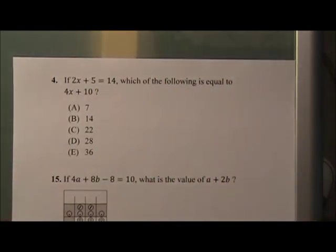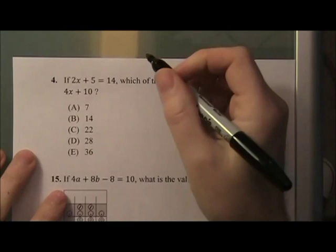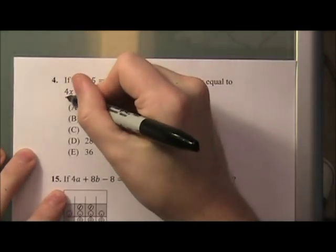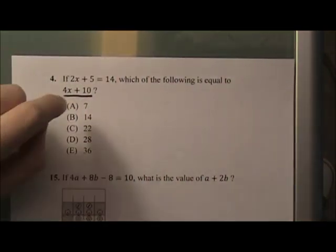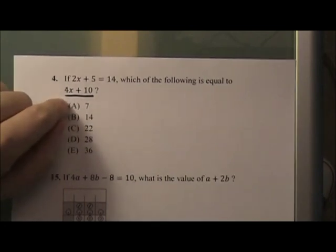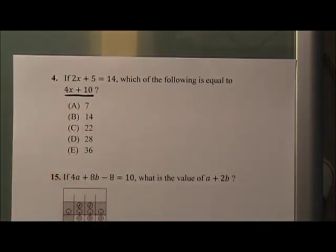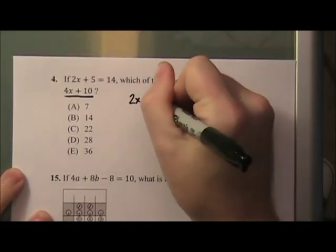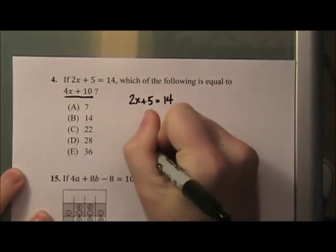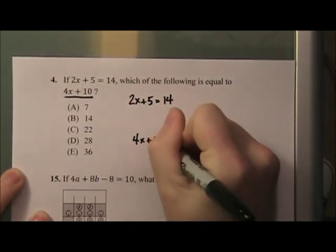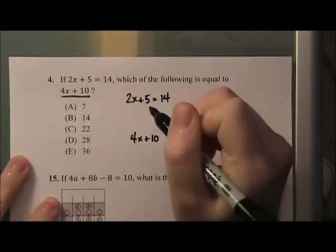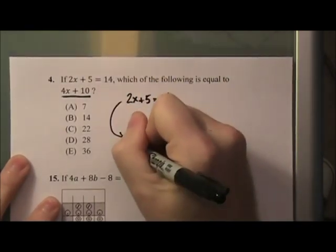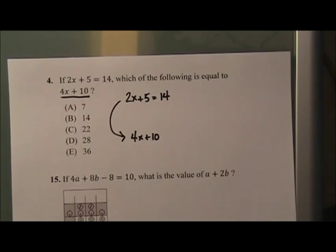Number 4, obviously, is not going to be a terribly difficult question, but you want to pay close attention to the actual question, right? So it's asking for 4x plus 10. It's not asking for x, right? So look what they're giving you. They tell you that 2x plus 5 equals 14, and they want to know what 4x plus 10 is. So the thing I want you to ask yourself is, is there an elegant, sort of straightforward way to go from here to here, right? Do I have to solve for x first and then do all this stuff, or can I go directly from the provided equation to what they're asking me for?